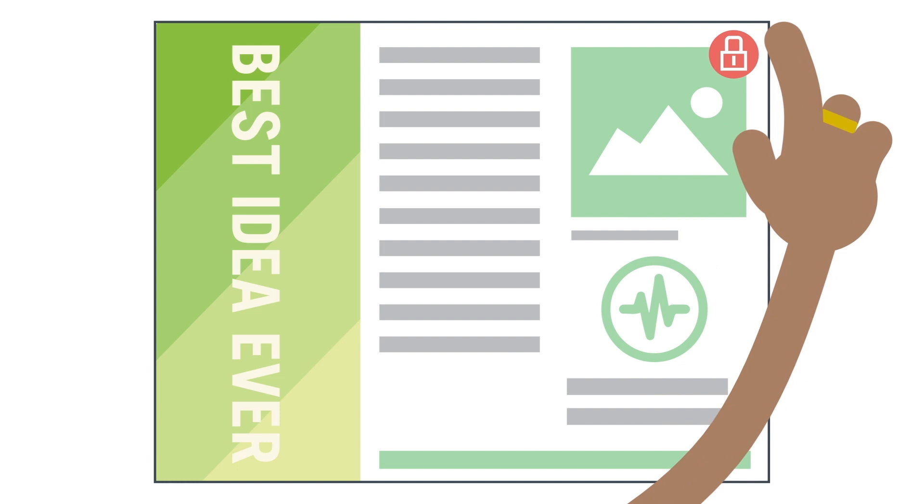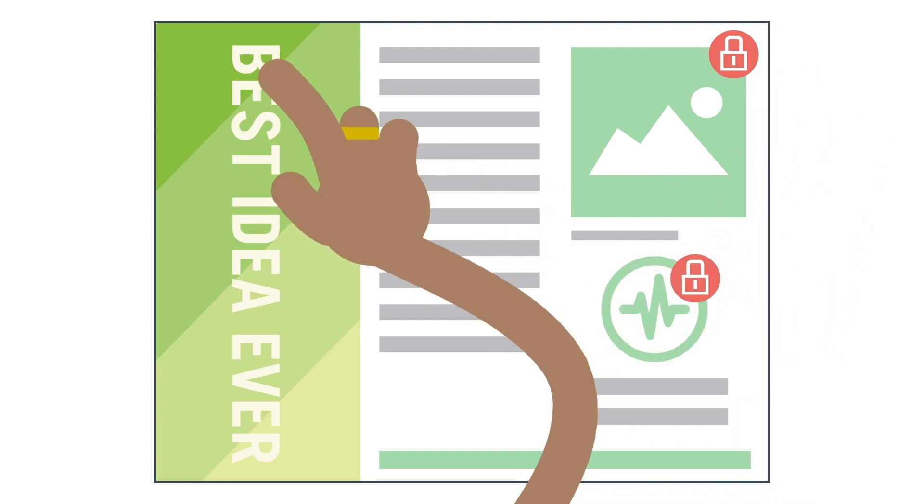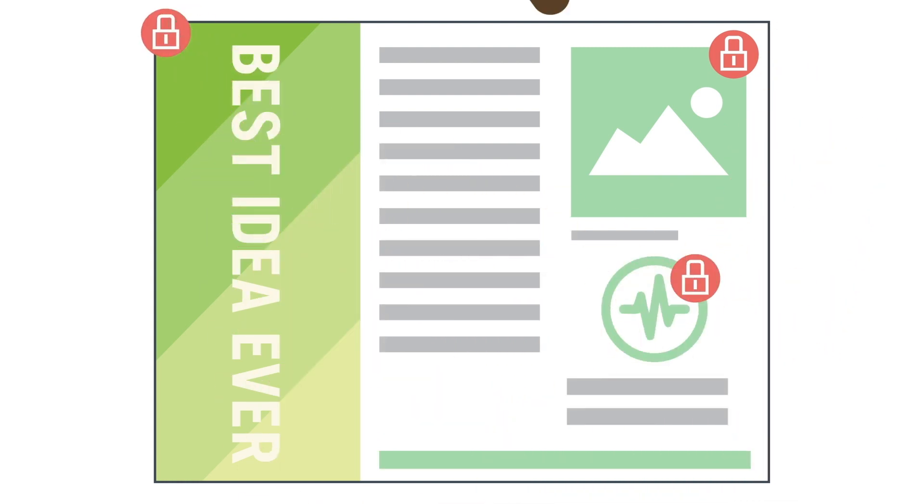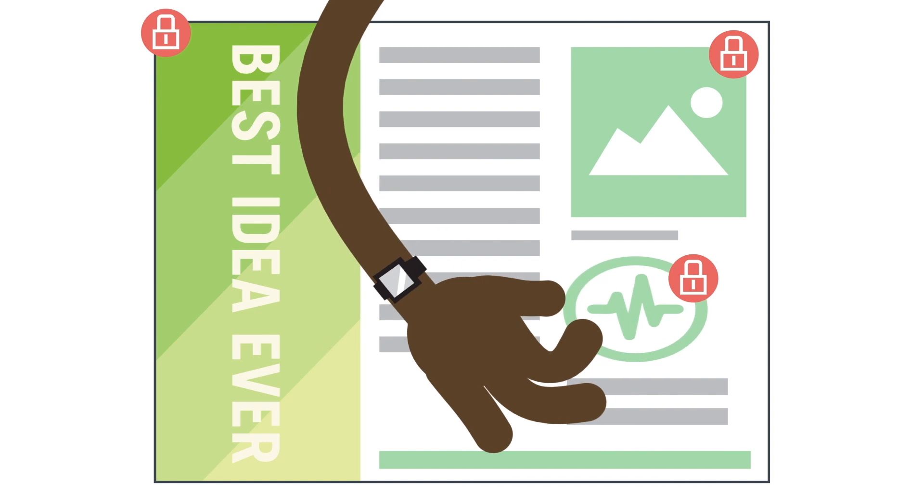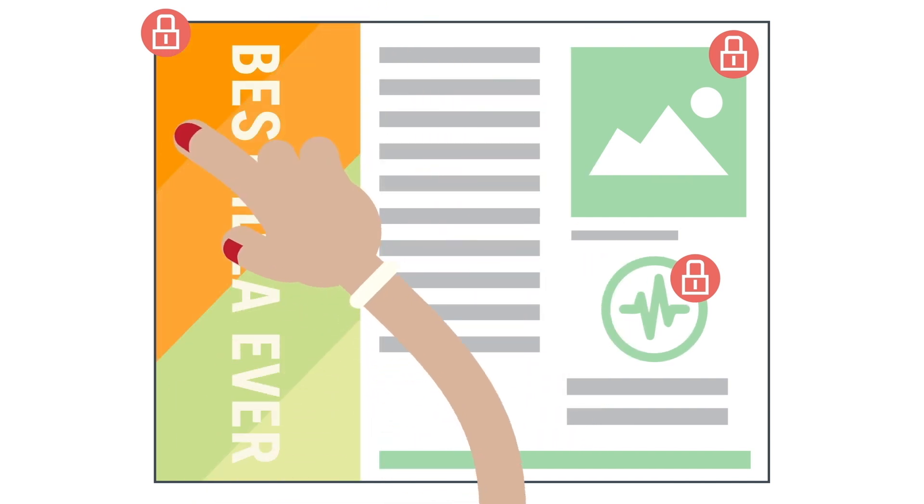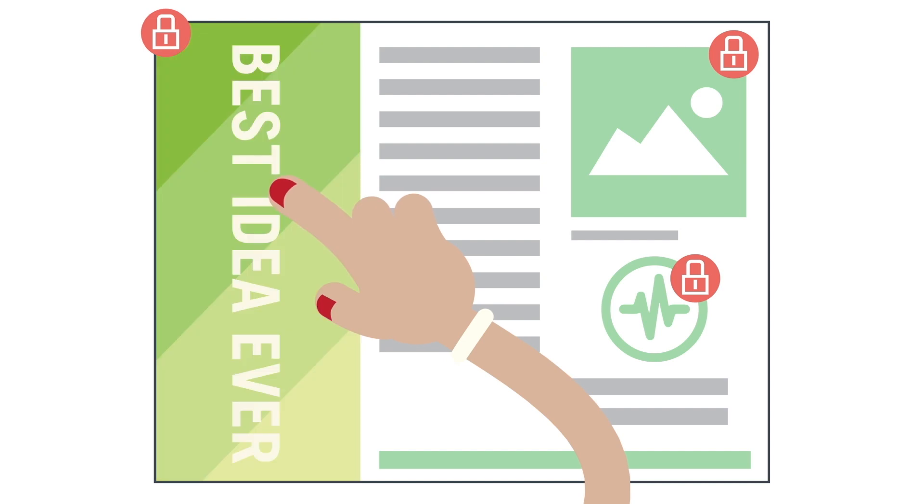Then, control the branding of your documents by locking down elements that should never be changed. That way, Earl from Events will stop stretching your logo, and Sandy from Sales will stop changing everything to orange and pink.